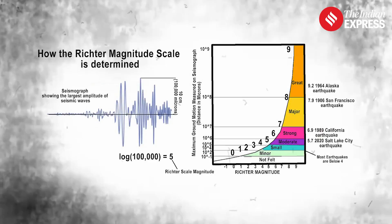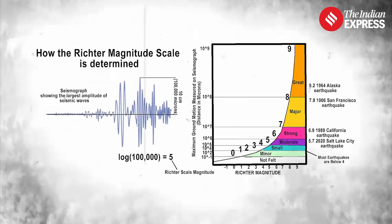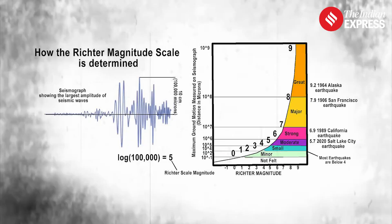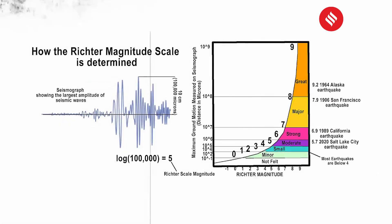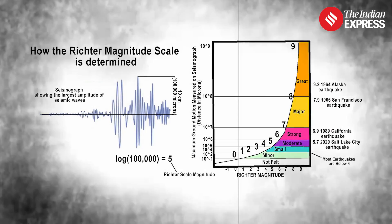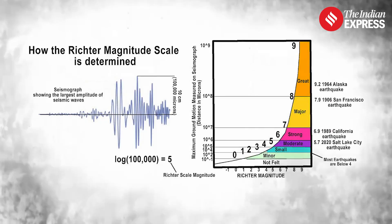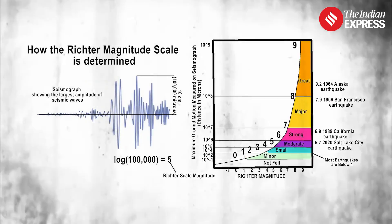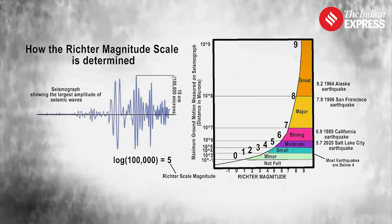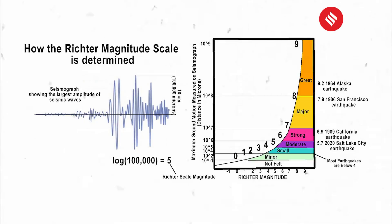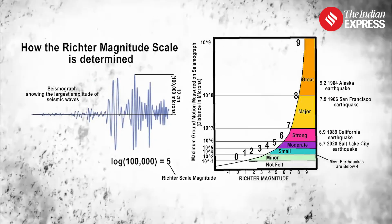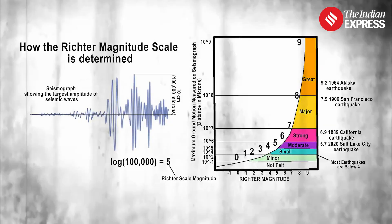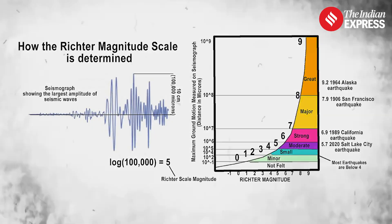The Richter scale runs from 0 to 10, with each whole number representing a tenfold increase in the amount of energy released. For example, a magnitude 6 earthquake releases 10 times more energy than a magnitude 5 earthquake.